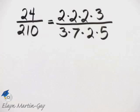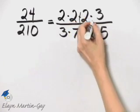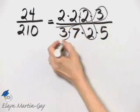Once we prime factor the numerator and the denominator, we can see if there are any common factors. Notice there's a common factor of 2, and there's also a common factor of 3.